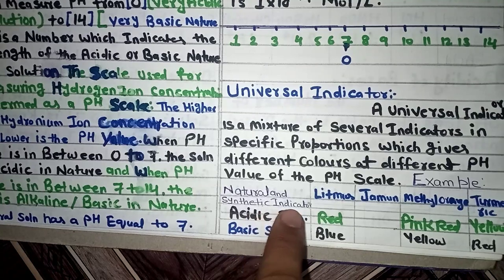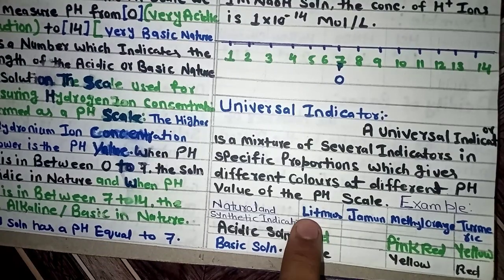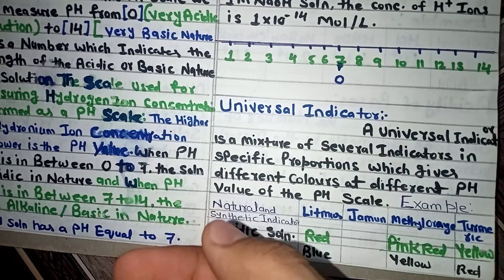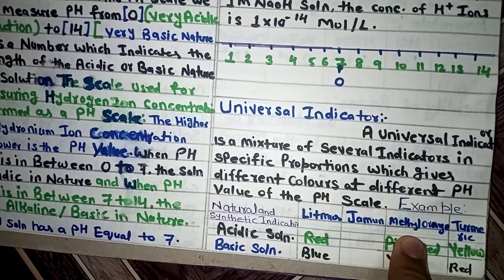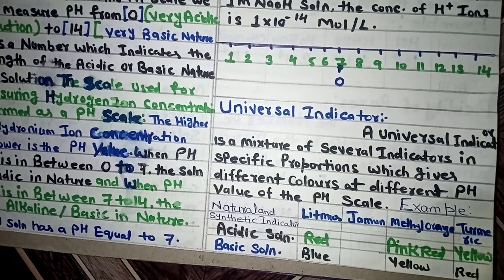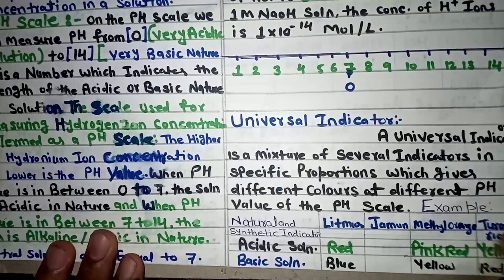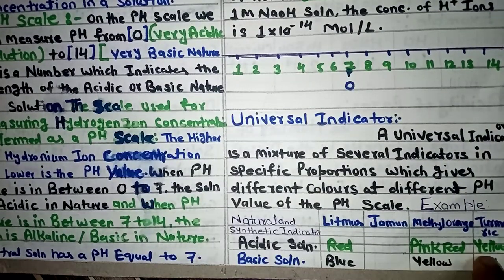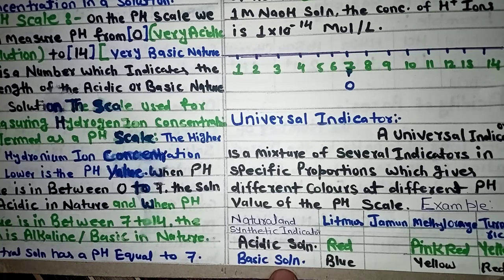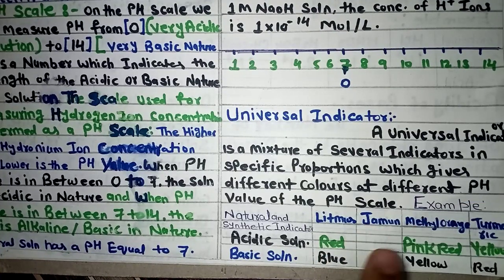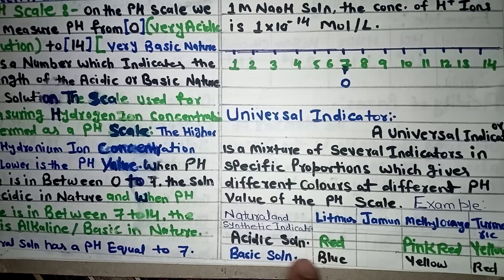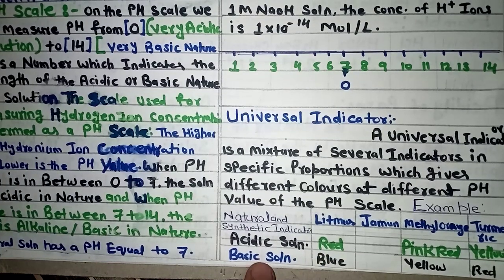Examples of natural and synthetic indicators include litmus paper (blue and red), jamun, methyl orange, and turmeric — which we use at home as an indicator. For litmus paper: in an acidic solution the color is red, and in a basic solution the color is blue. When you have an acidic character, the color shown is red; when basic, it is blue. For methyl orange: in acidic solution the color is pink, and in basic solution it turns yellow.